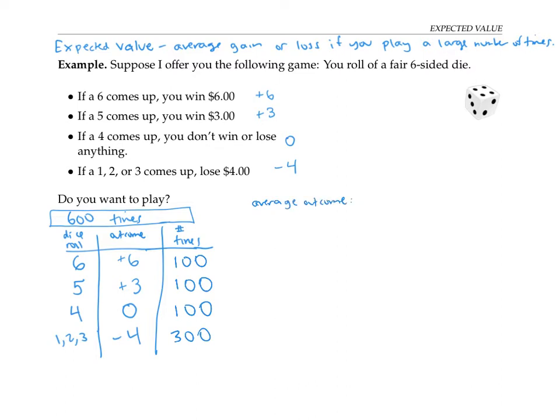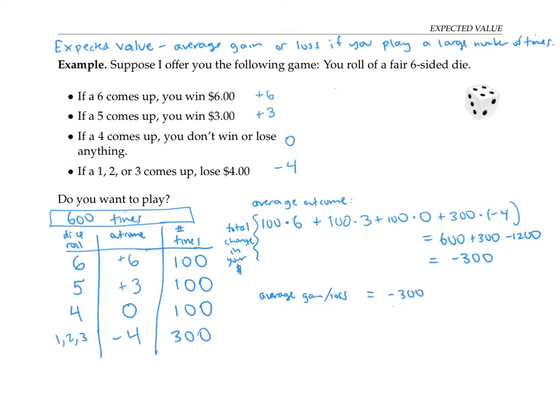Well, to find the average outcome, I can add up all the money you win and lose over these 600 games and divide by the 600 games. So 100 times you're going to win $6, so $600, plus 100 times you'll win $3. 100 times you'll win $0, and 300 times you'll lose $4, so that's negative four times 300. If I add that all up, 600 plus 300 minus 1200, that works out to minus $300. That's the total change in your money after 600 games. But now to find the average gain or loss, I need to take that total and divide by the number of games, and that works out to negative one half, or negative 50 cents.